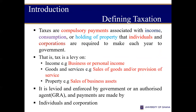The first point is that tax is a compulsory payment levied on persons and businesses. Secondly, it is levied on the income, consumption, and properties that individuals and businesses have. The third point is that taxes can only be levied by governments or any other authorised agent of governments. Individuals are not in a position to impose tax.